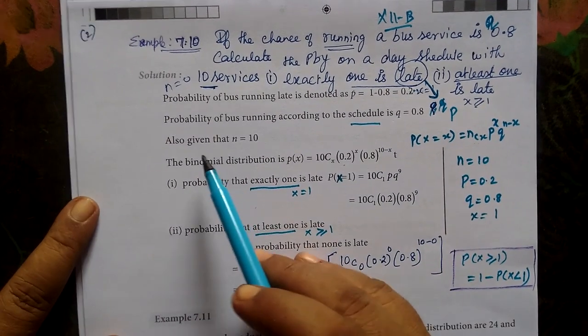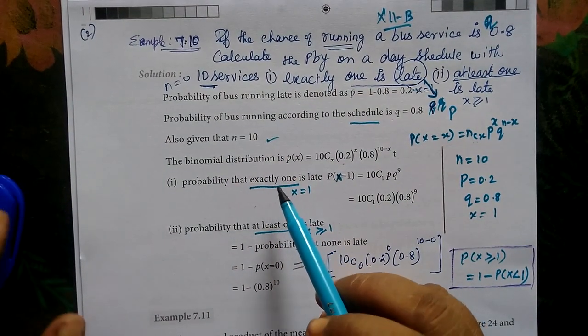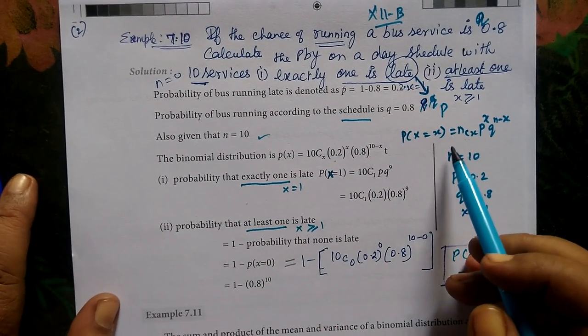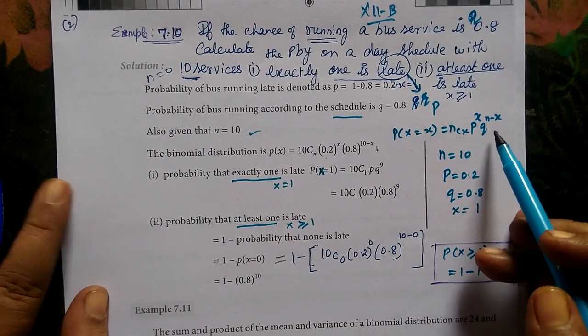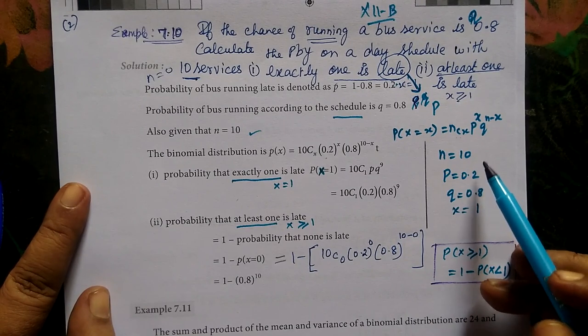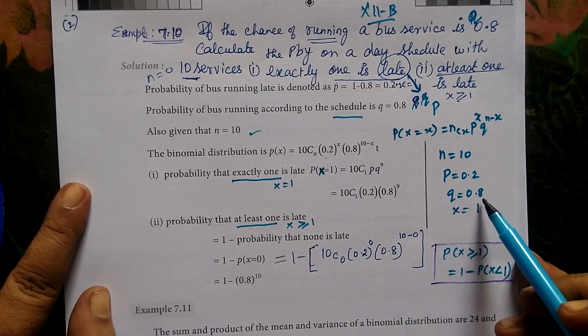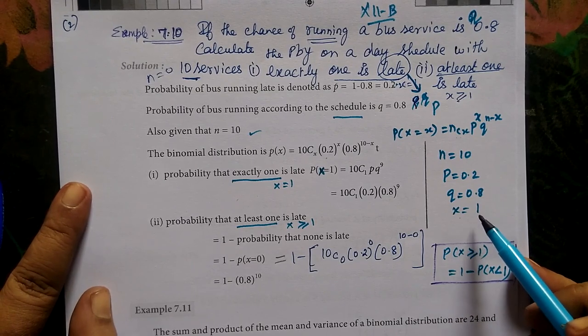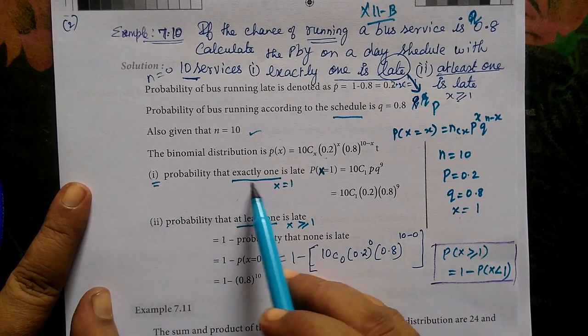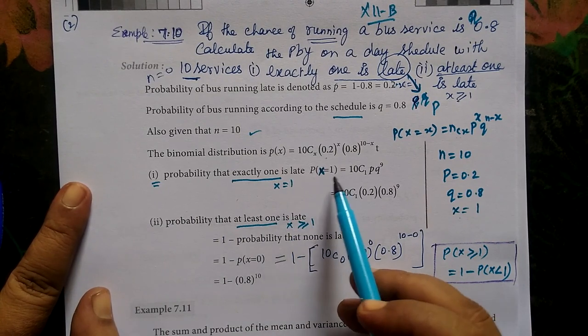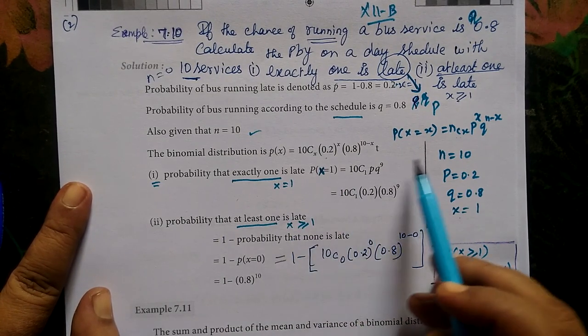Now the answer is given. The n is 10. Then the binomial distribution formula: P of x equals nCx times p to the power x times q to the power n minus x.